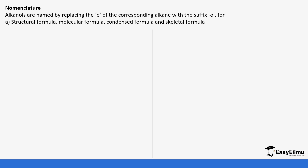So we start with the nomenclature of alcohols. We are going to look at alcohols from the first to around the tenth member. We will look at the structural formula, molecular formula, condensed formula, and skeletal formula. We start with the structural formula because it makes it easier to draw the diagram.